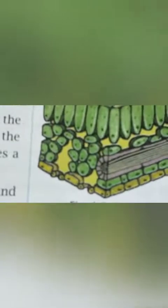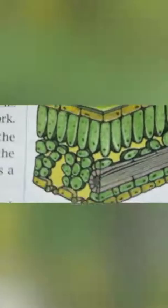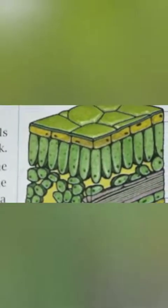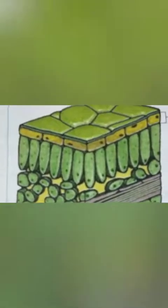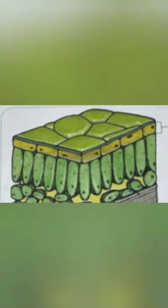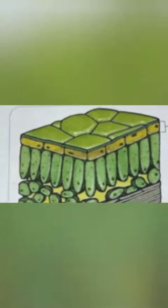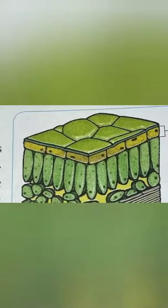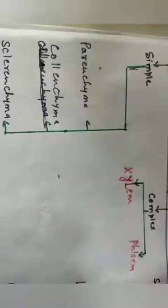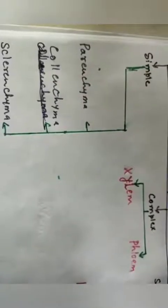The epidermis also secretes a cuticle, which is a waterproof layer on the leaf. So this epidermis is a protective tissue.